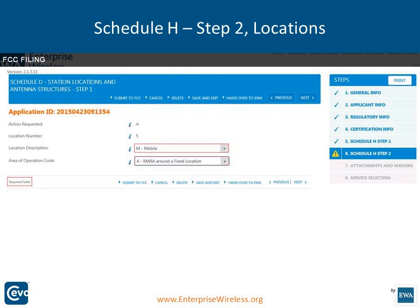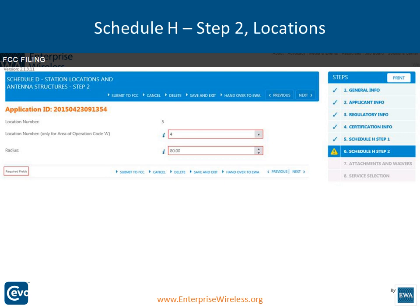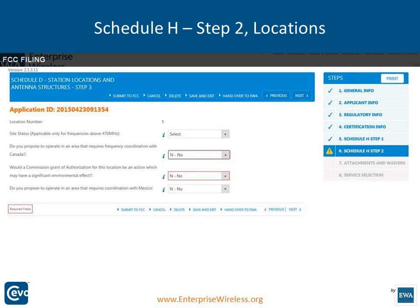For mobile only, pick M for mobile and it will pre-populate. You'll indicate which location number the mobile operates around. In this example we picked location four with an 80-kilometer radius. With an 80-kilometer radius we're not compliant with the FCC's safe harbor table — for VHF it's only 40 km and for UHF it's 32 km — so you would need to provide a justification statement and a contour as to why you need more than what the FCC allows. It also asks whether you're north of Line A or west of Line C, and whether there will be a significant environmental effect.